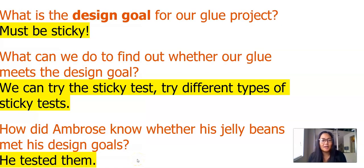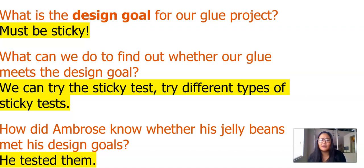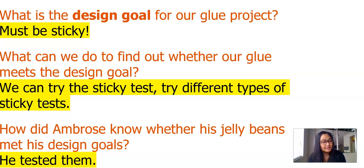I want to go back and think about our glue project in relation to our design cycle. The first question is: what is the design goal of our glue project? We agree that our design goal must be that this glue must be sticky. Next, what can we do to find out whether our glue meets the design goal? We've done a lot of sticky tests, so I think that's a way to meet our design goal. We can try the sticky test and also try different types of sticky tests.